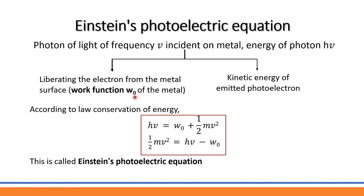The work function is the minimum energy required for photoelectric emission. The incident radiation energy h-nu is partly used as the work function W₀, and the remaining energy is converted into the kinetic energy of the ejected electrons. This is called Einstein's photoelectric equation.